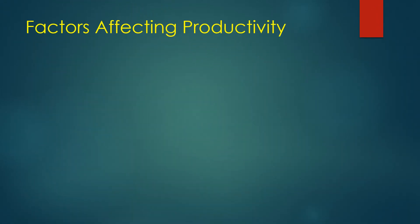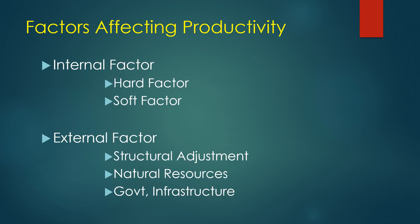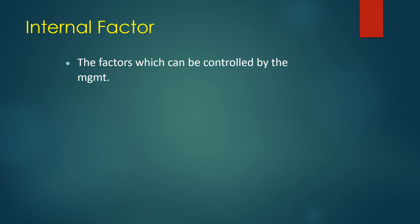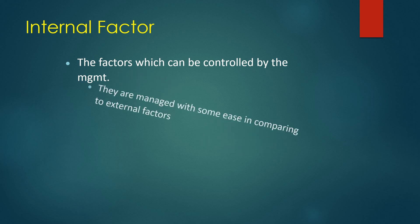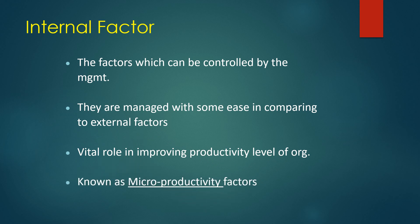Factors affecting productivity include internal factors — which include hard factors and soft factors — and external factors, which include structural adjustment, natural resources, government infrastructure, and more. Internal factors can be controlled by the management system and are managed with greater ease compared to external factors. They play a vital role in improving the productivity level of an organization and are also known as micro productivity factors.